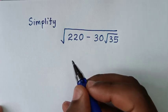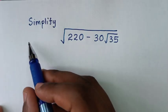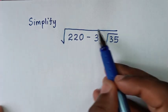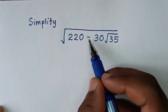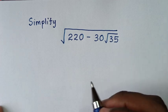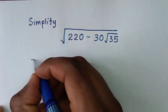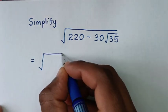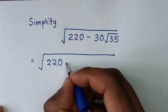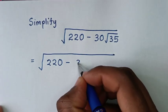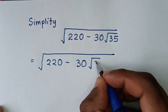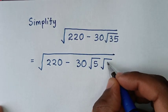Hello, you are welcome to solve this math problem of simplifying the square root of 220 minus 30 square root of 35. The solution: it will be equal to square root of 220 minus 30 square root of 35, which is the same as square root of 5 times square root of 7.